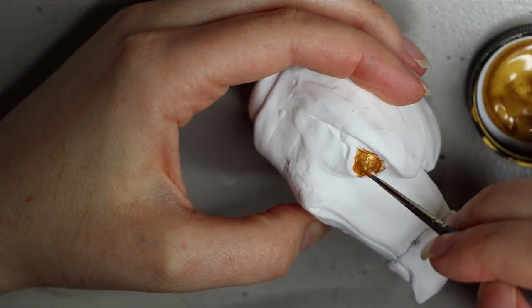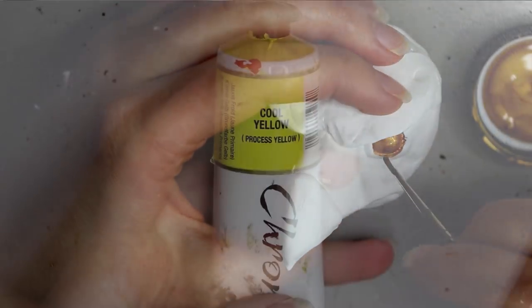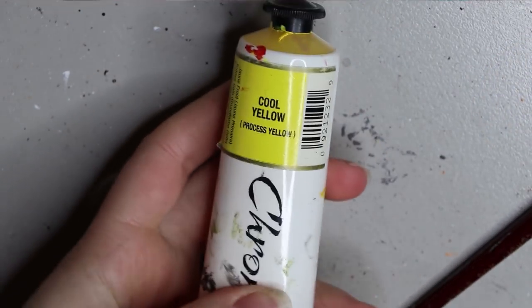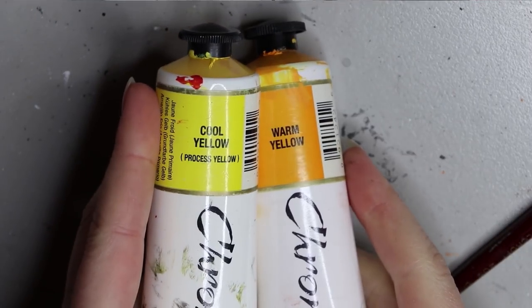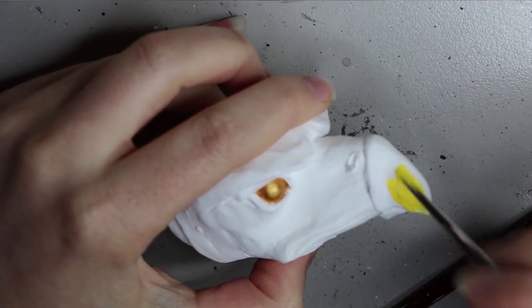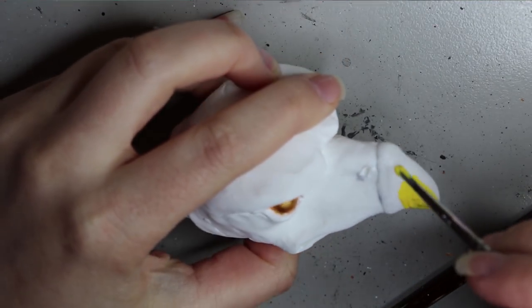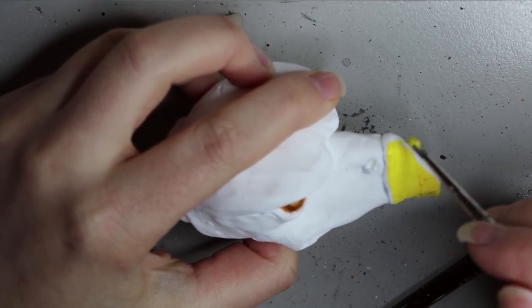Going to be painting the beak now and I'm using a cool yellow chrome acrylic paint. I'm going to be adding some warm yellow to the tip of the beak as well. Just adding that vibrant yellow and waiting for it to dry, then I'll go in with that warm yellow and add some highlights on the end of it.